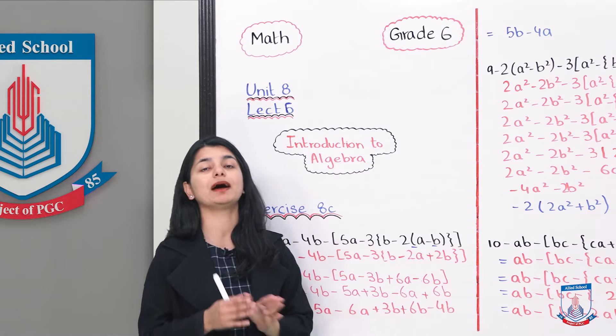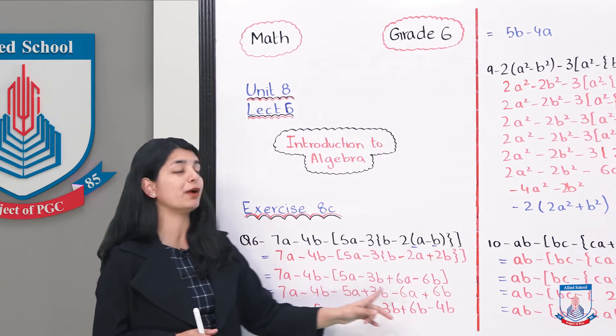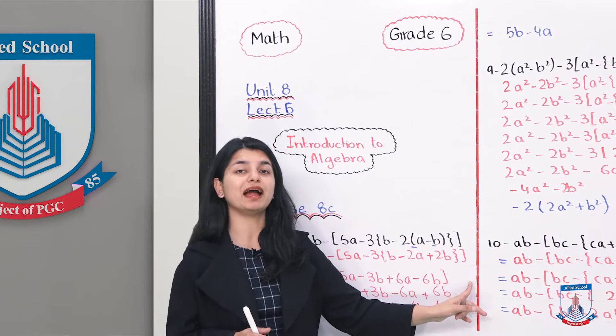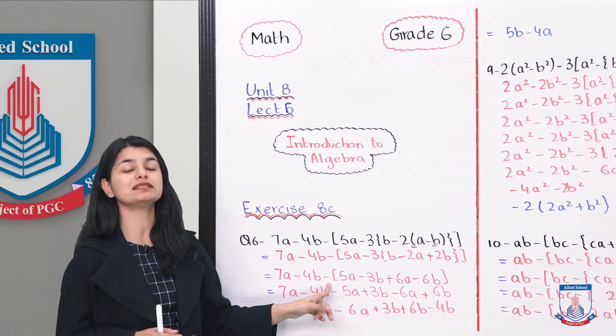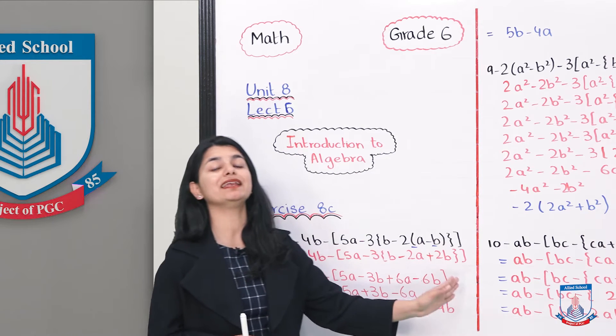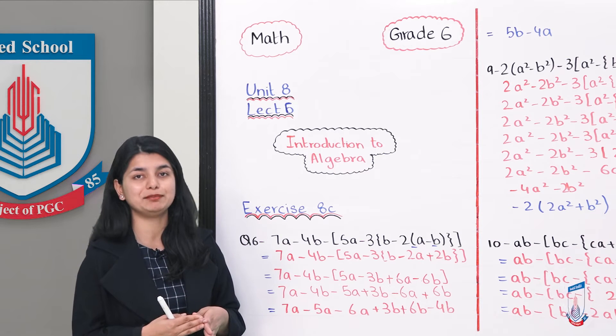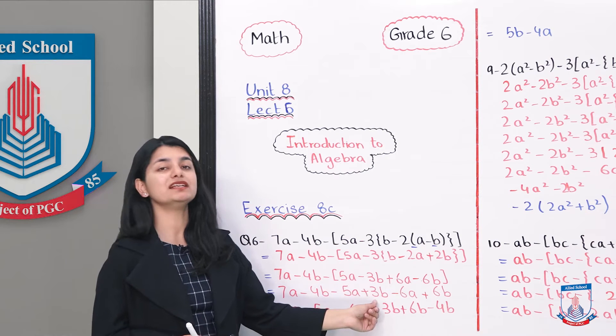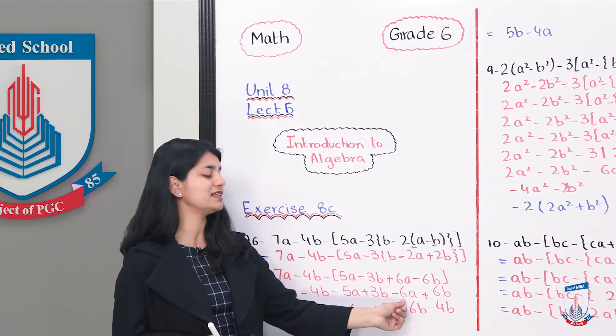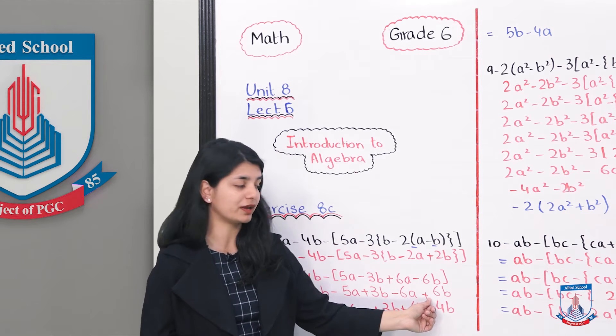And we have almost opened our whole braces. Braces open karne ke baad ab humara jo target hai that is what? That is to open our bracket. Jo sabse baahir wala bracket hai usko ab hum open karayenge. Uske liye kya hai? Baahir minus ka sign hai. Jo kuch us bracket ke andar hai, usab ka sign basically change de ga. Kya aap sign se multiply karayen. For that what we do is 5A minus 5A ho gaya, minus 3B plus 3B ho gaya, plus 6A minus 6A ho gaya and minus 6B plus 6B ho gaya. In this way we converted all of the signs.